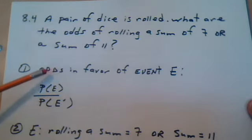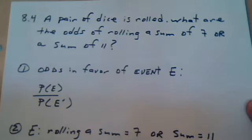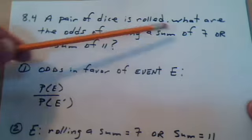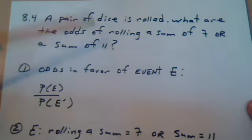We're looking for the odds in favor of event E. E is the happening, the event, that the sum is 7 or a sum of 11 falls.